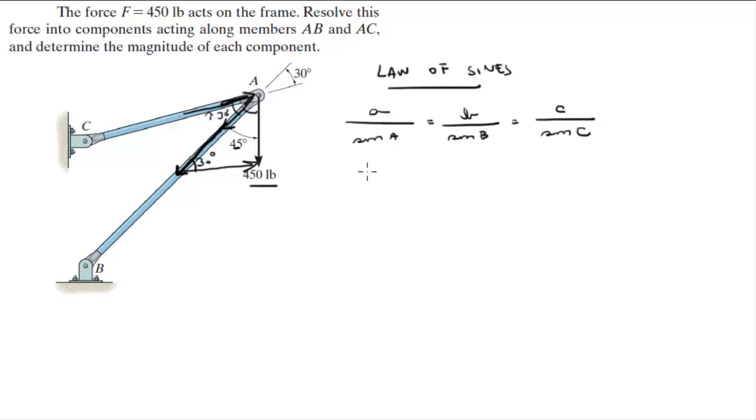So when you plug in the numbers you get that 450 over sine of 30 is equal to - hold on, let's call this side AB and this side is AC because it got translated over here - so AC over sine of 45. When you solve for AC you're gonna get that AC is equal to 636.4.